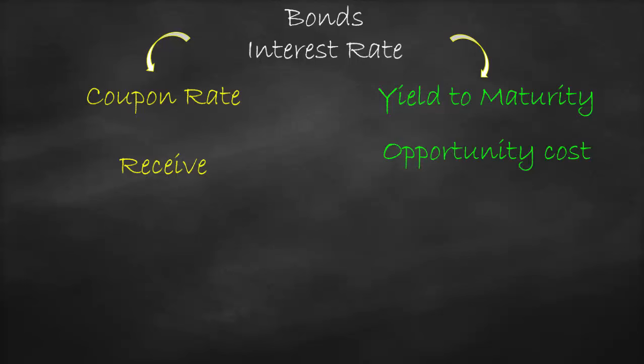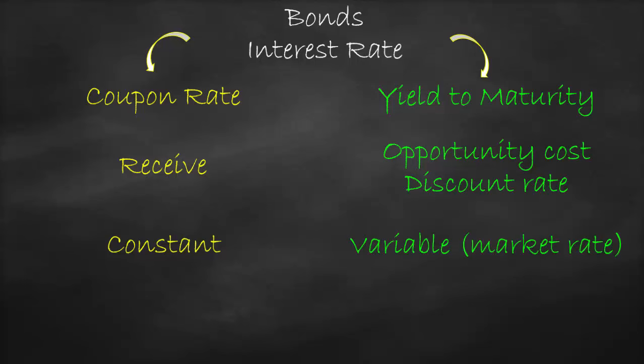For coupon rate, it's always constant because it's the rate that was mentioned in the contract that we're going to receive. While yield to maturity is a variable because this depends on the market rate, which fluctuates — it goes up and down.